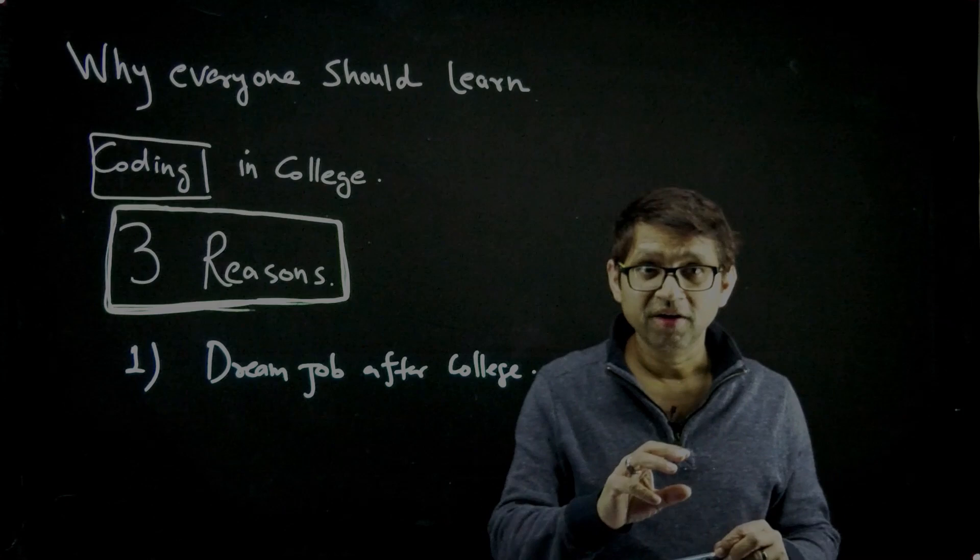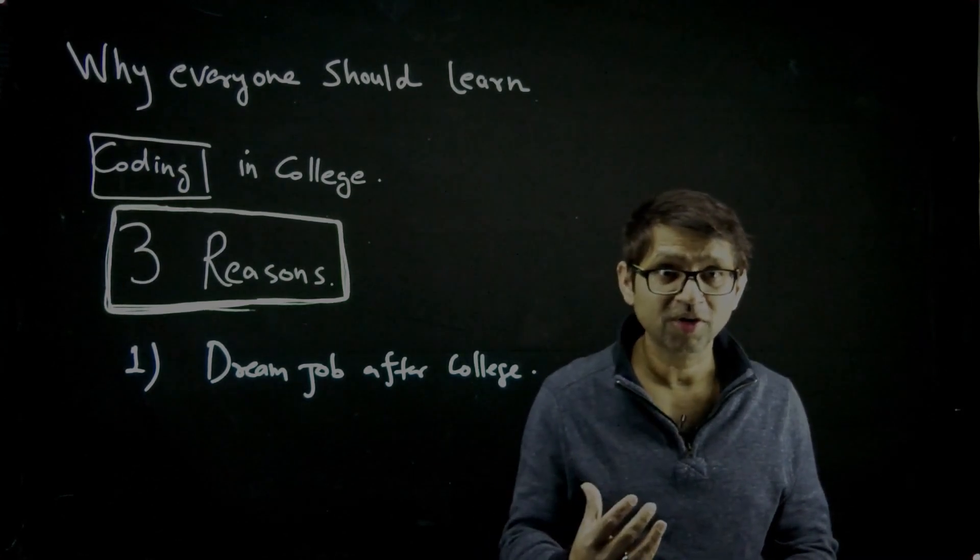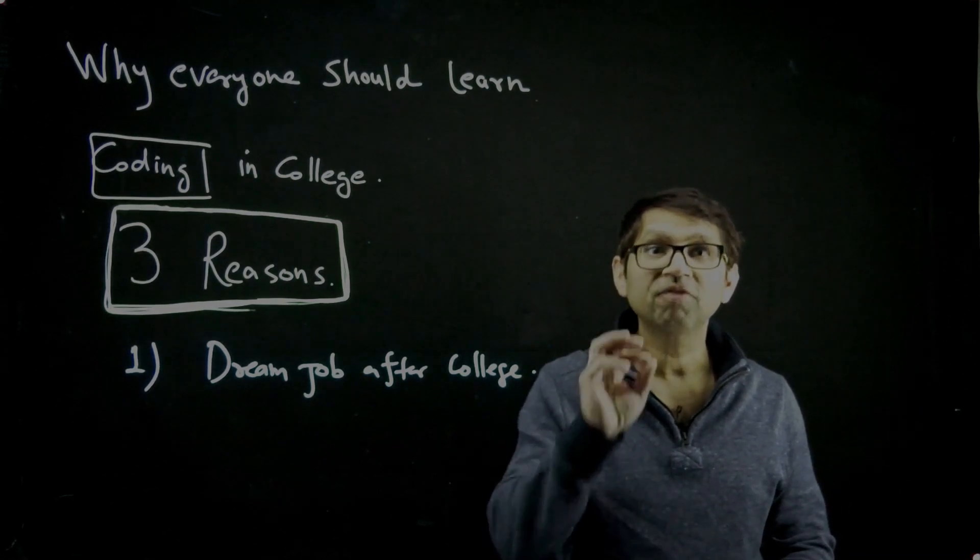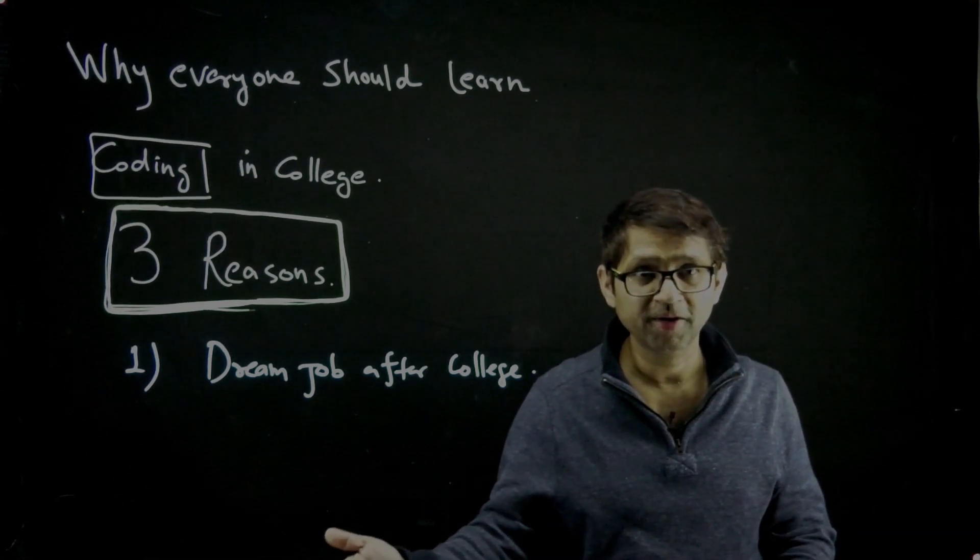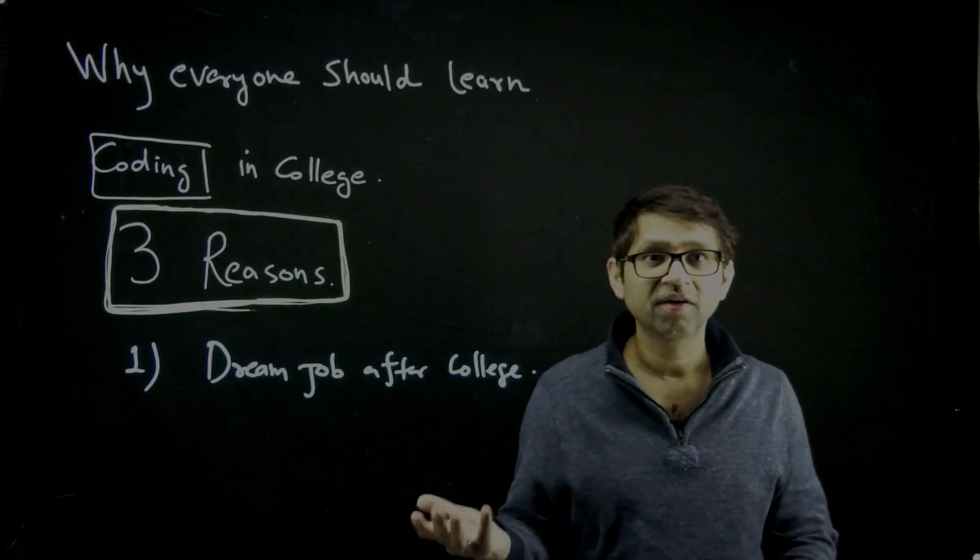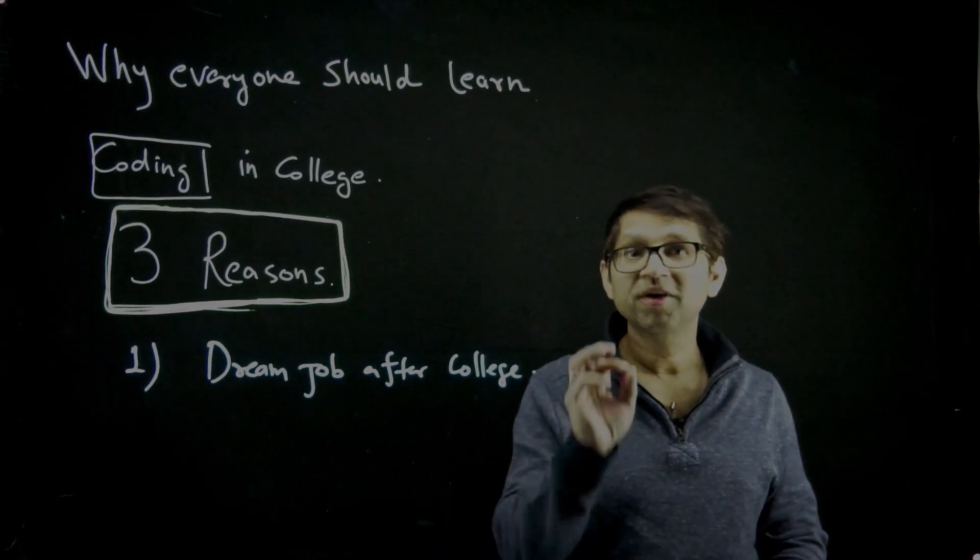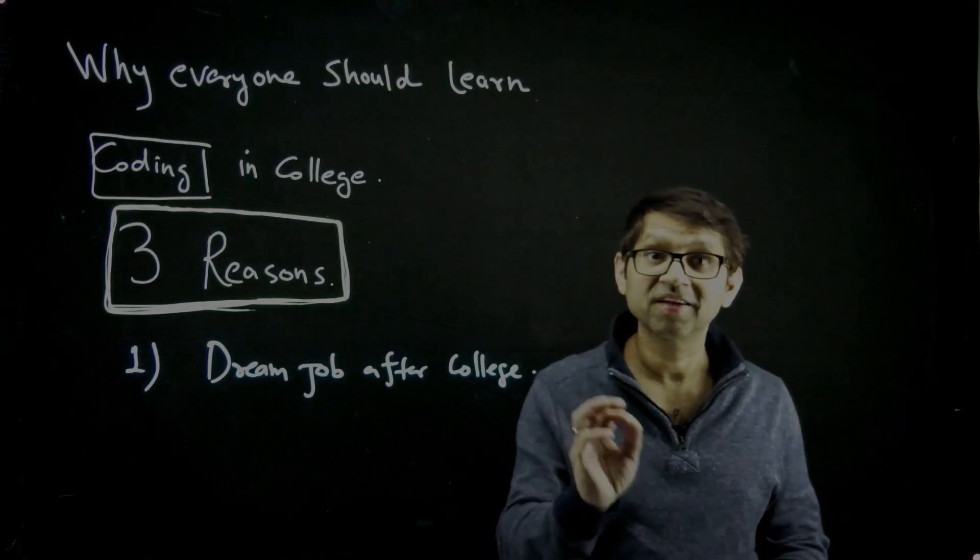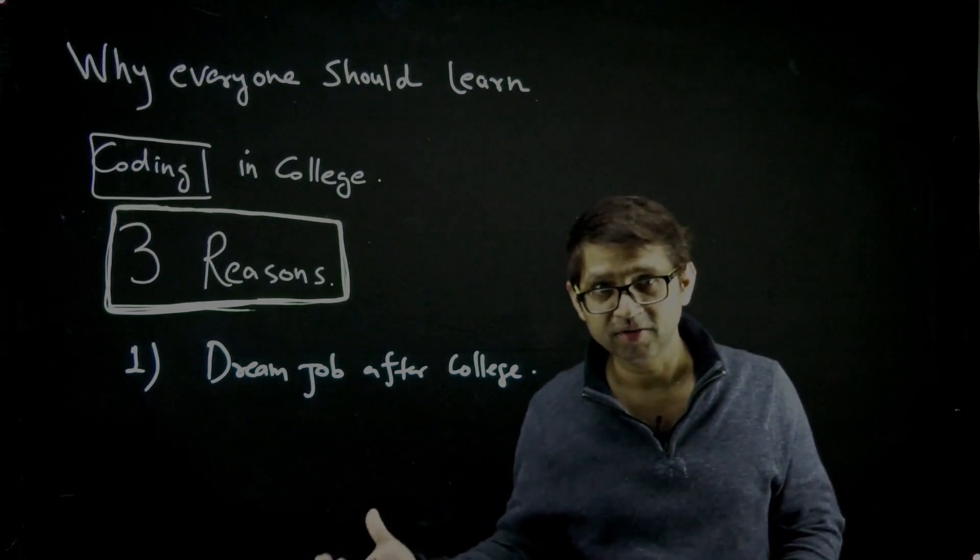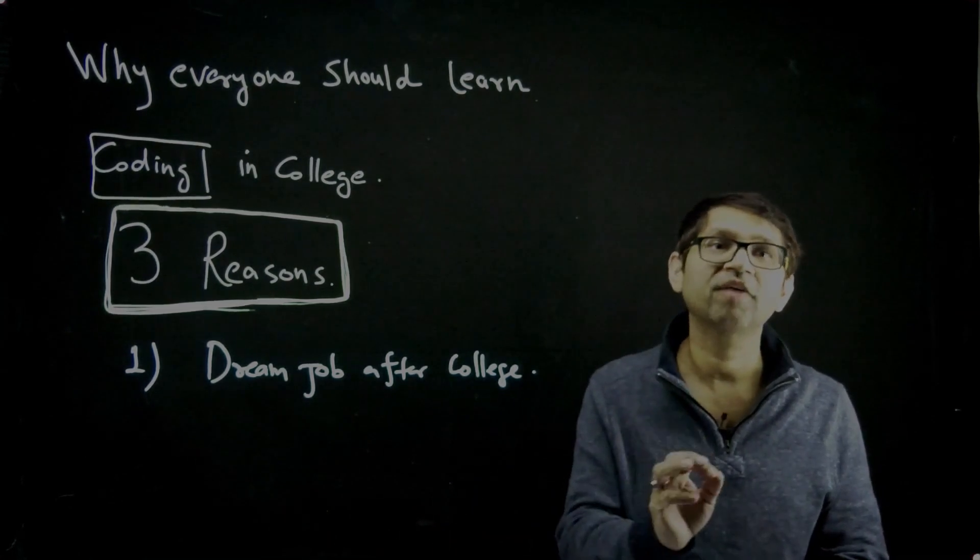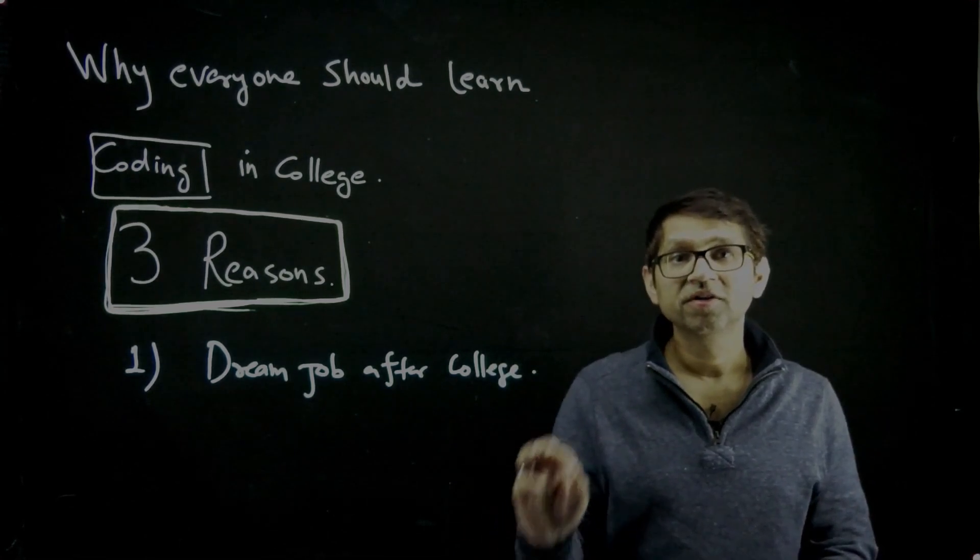Some people start at three to four lakhs per annum and others get 20-25 lakhs. See the huge difference. The difference is based on the college, but that's one thing. The other thing is your knowledge - what you know if you're planning to apply to software industries, and whether you're able to crack the interviews of your dream company or not.